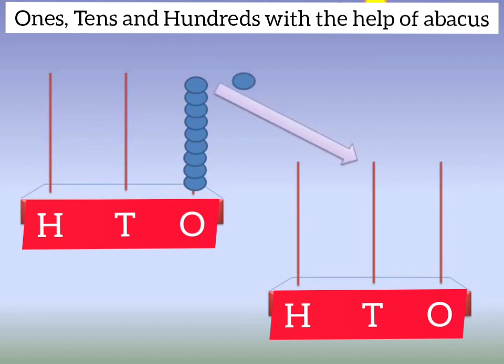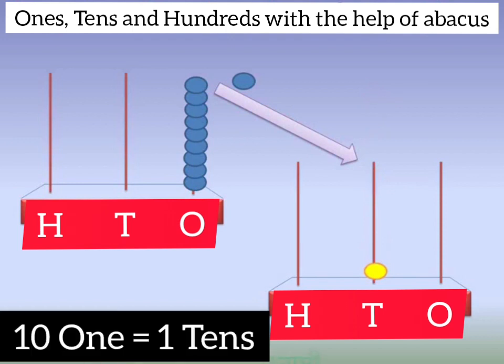So in place of 10 beads of one's rod, we put one bead in tens rod. Yes, 10 ones is equal to 1 tens.